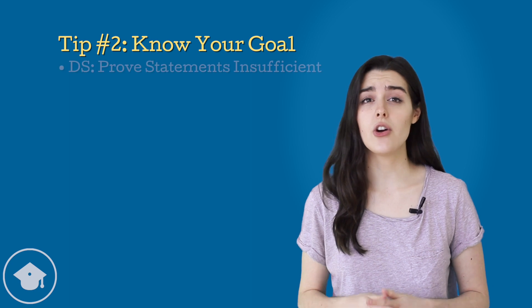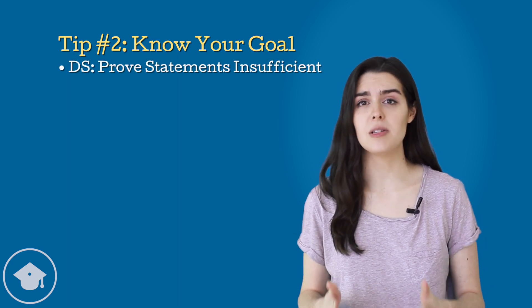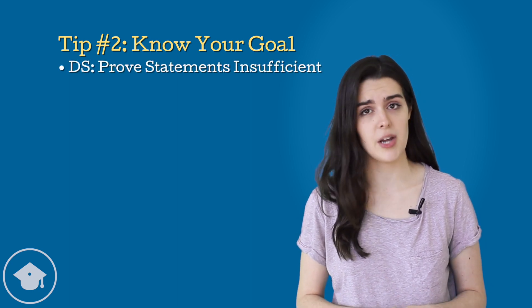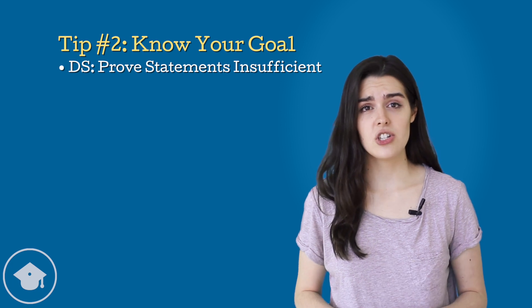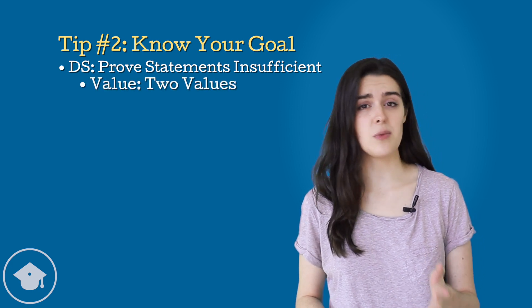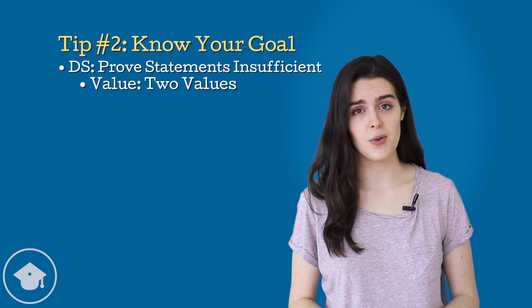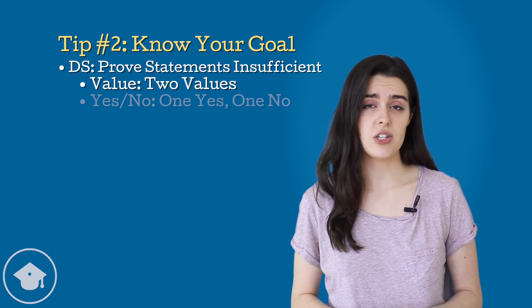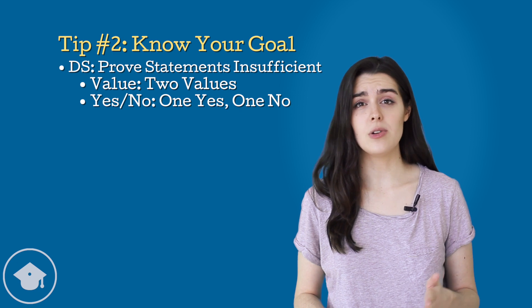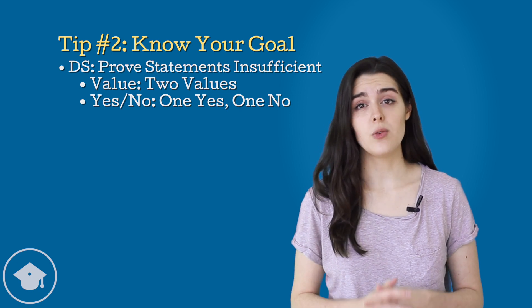On data sufficiency, our goal is to prove each statement or the statements combined insufficient to answer the question stem. So on value data sufficiency questions, we want to pick one number that will give us one value and a second number that will give us a different value. On yes-no data sufficiency questions, we want to pick one number that will give us a yes and one number that will give us a no.